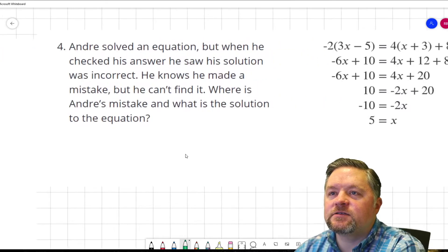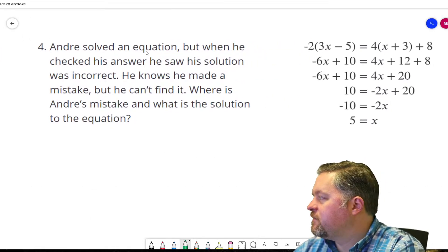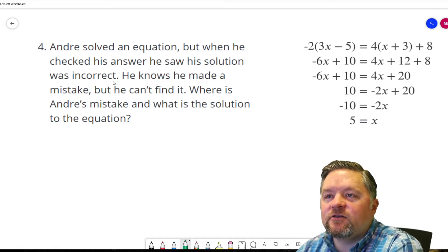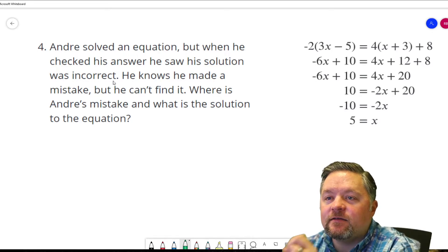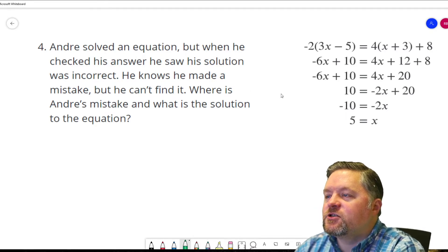Okay, what's next? Andrei solved an equation. But when he checked his answer, he saw his solution was incorrect. He knows he made a mistake, but he can't find it. Where is the mistake, and what is the solution to the equation?